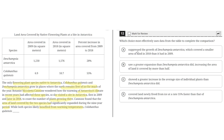Option A says Descampsia Antarctica suppressed growth and covered a smaller area of land in 2018 than it had in 2009. This is incorrect, because looking at the graph, Descampsia Antarctica had a greater area of land covered in 2018 than in 2009. So this is incorrect because it doesn't match the graph.